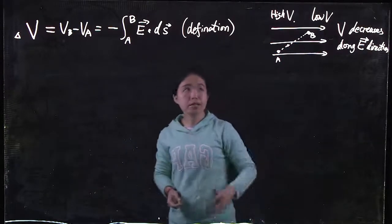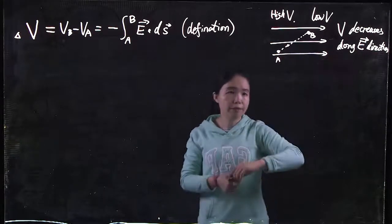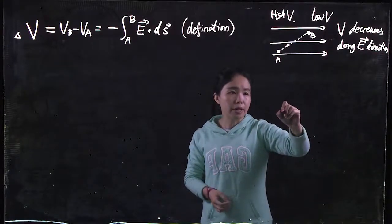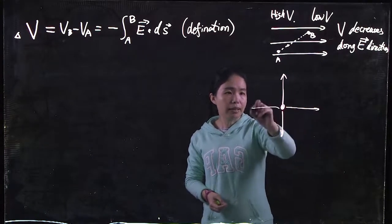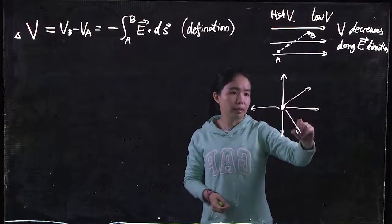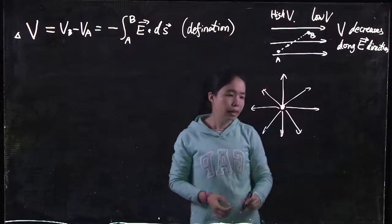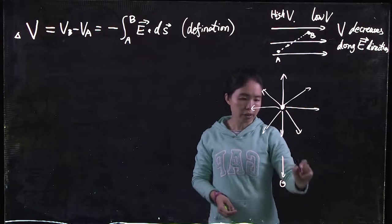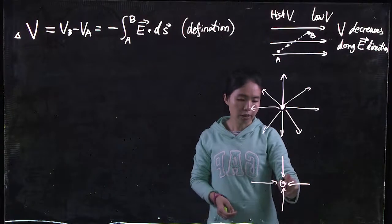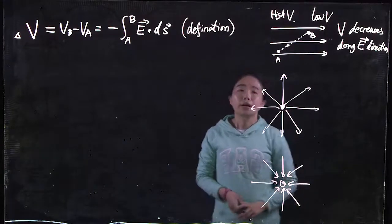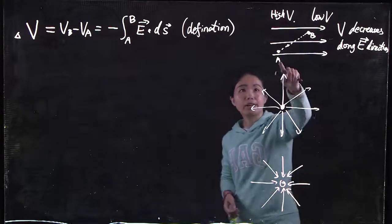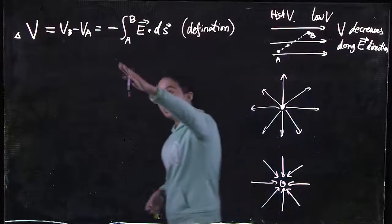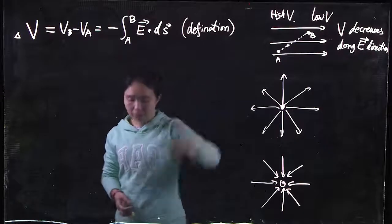That definition is true in any situation: for uniform E field, for arbitrary E field, for any E field whatsoever. If you have a positive charge, you have an E field radiating outward. If you have a negative charge, you have an E field pointing toward the charge. In any situation, as long as you have an E field going from location A to B, you have a potential difference defined by that integral.